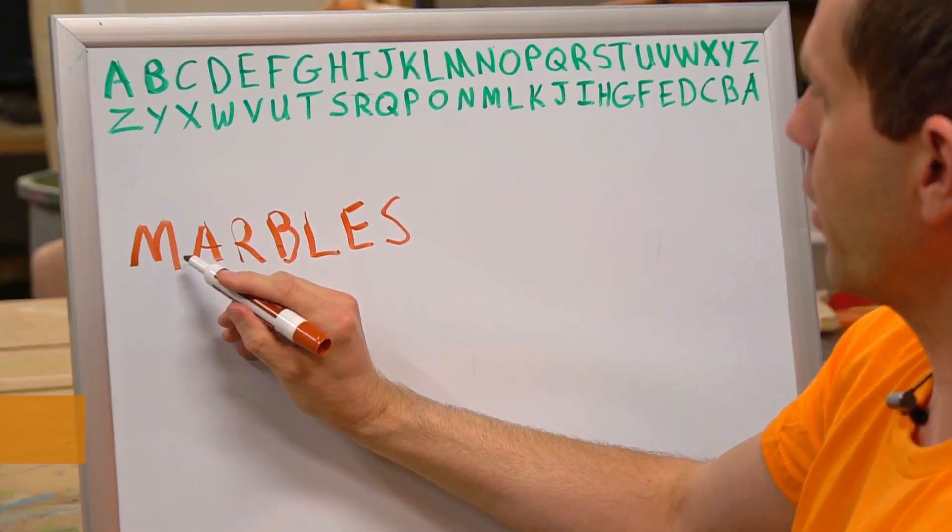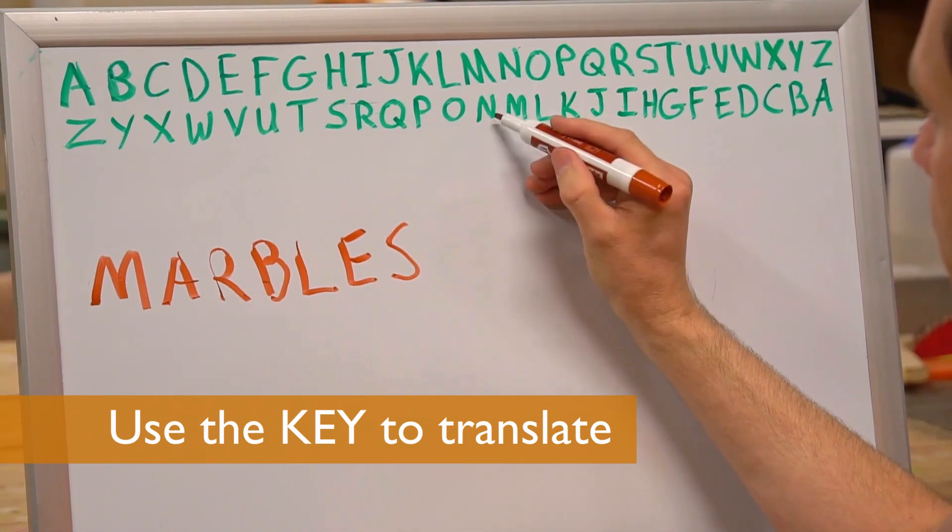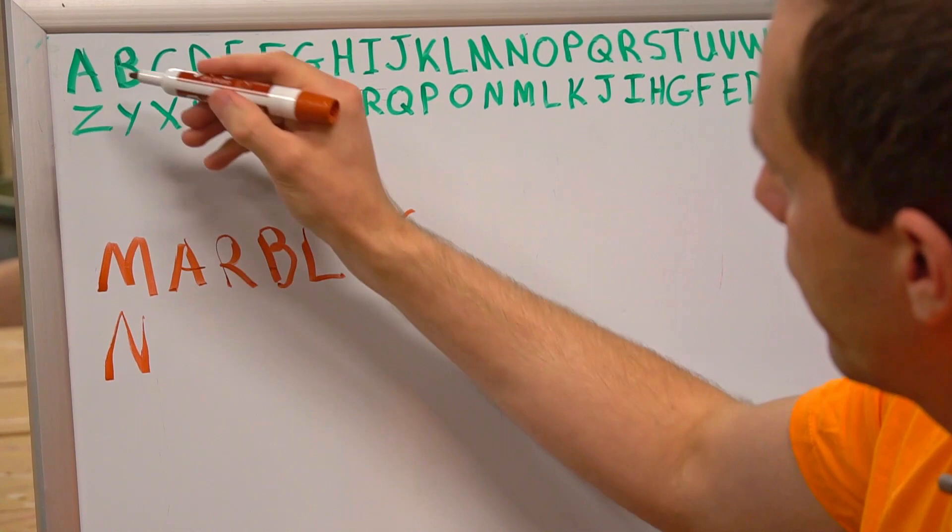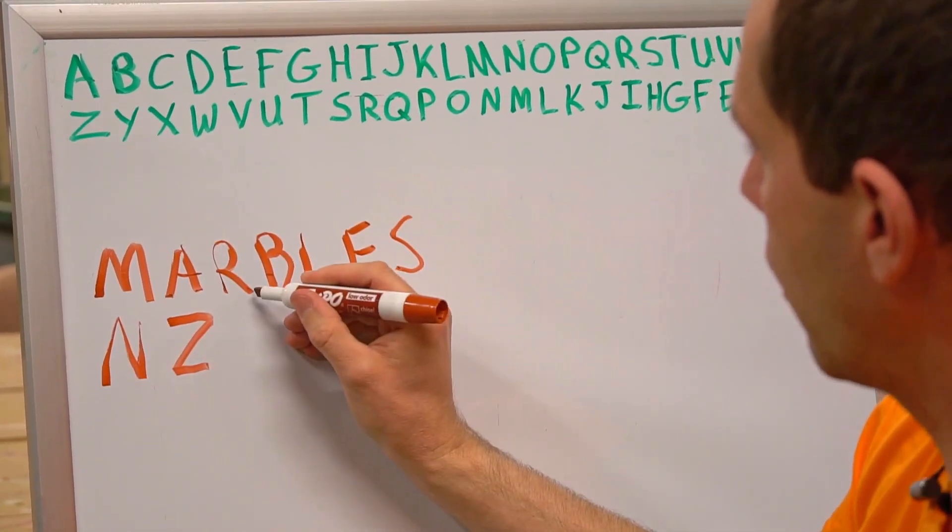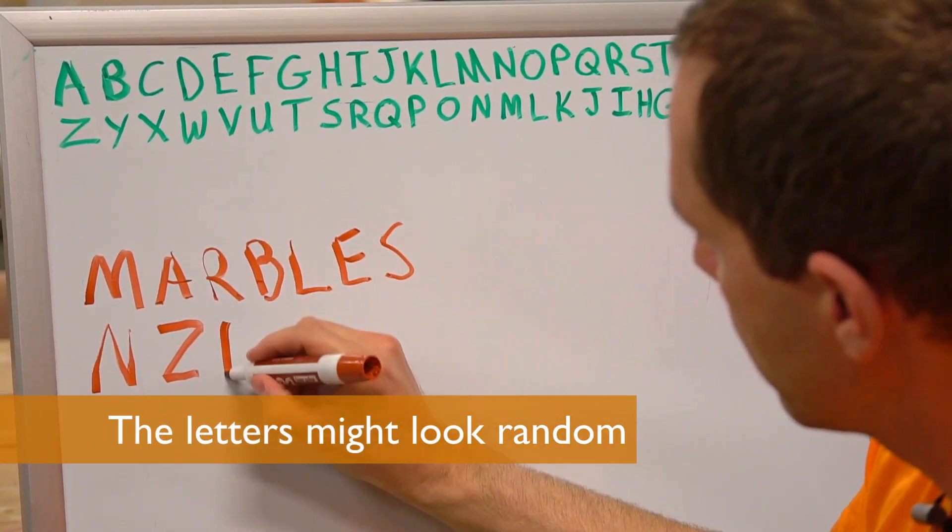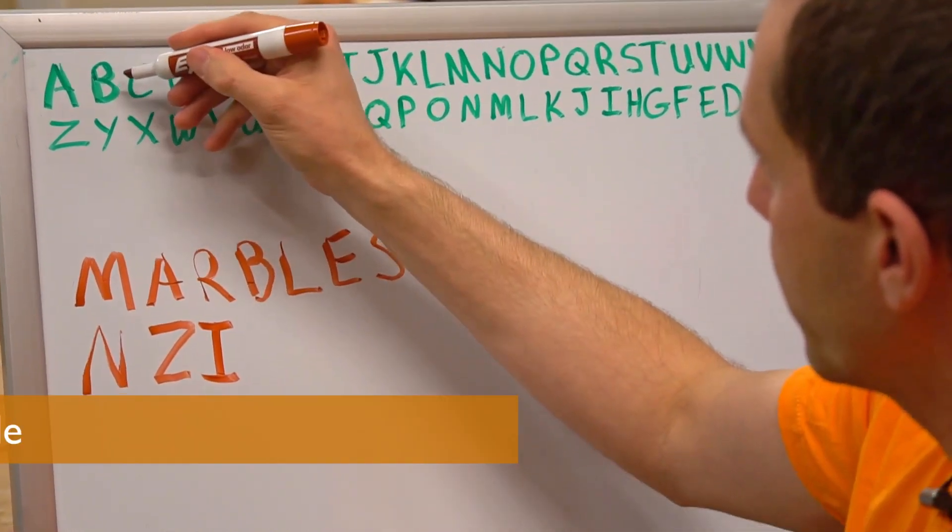So to write this in secret code, we'll use our key to translate each letter. So M becomes N, A becomes Z, R becomes an I, B becomes Y.